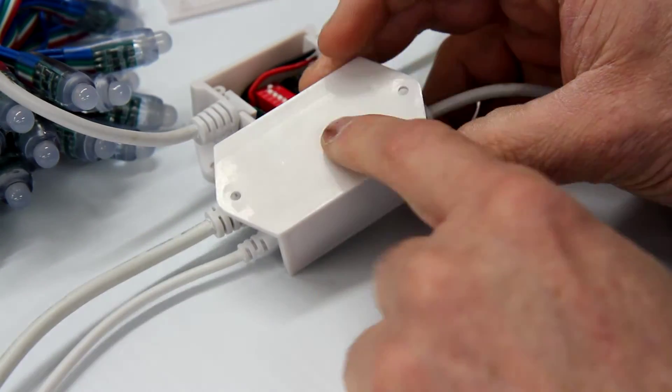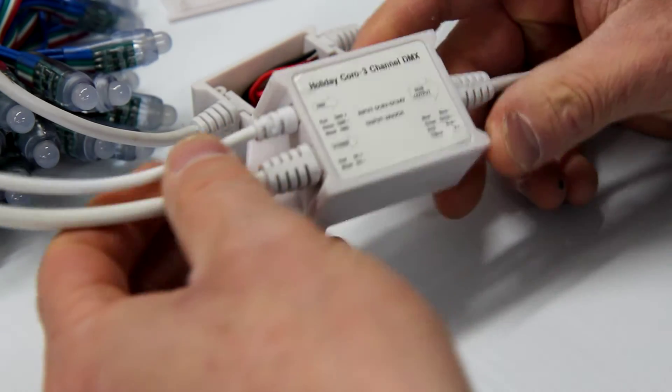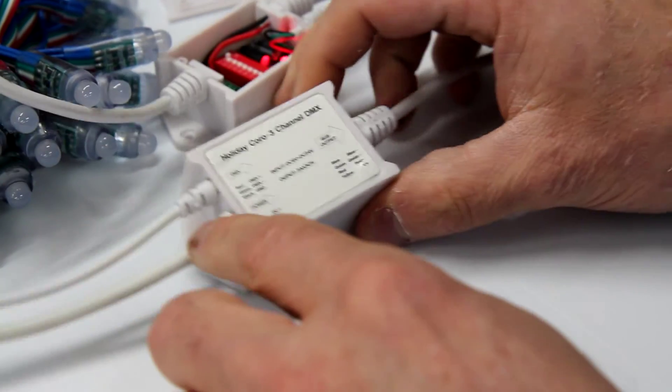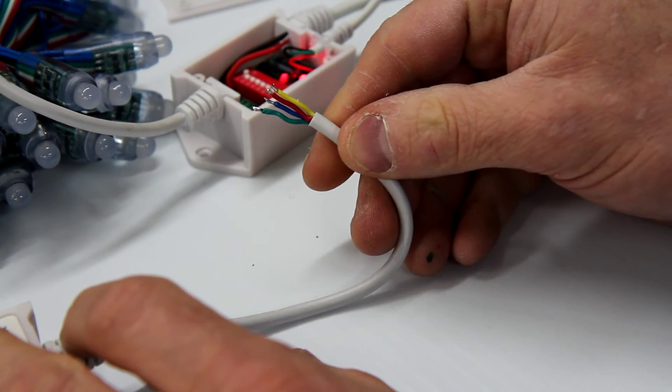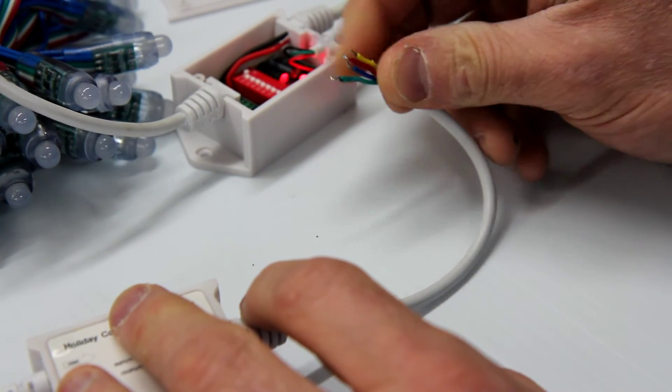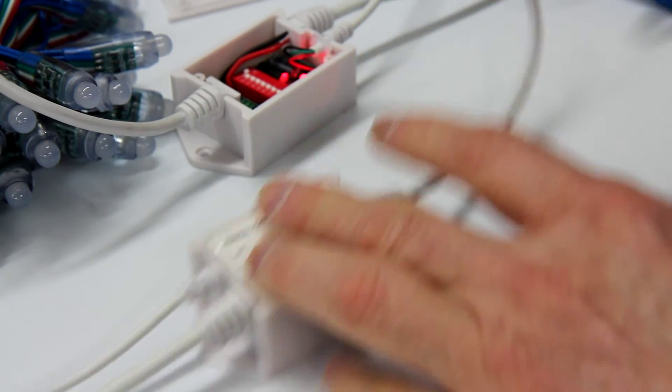You can also use hot glue, double-sided tape, those types of things to attach it. It features strain reliefs on the cords and includes 18 gauge wire for the inputs and outputs. This is a very durable controller.